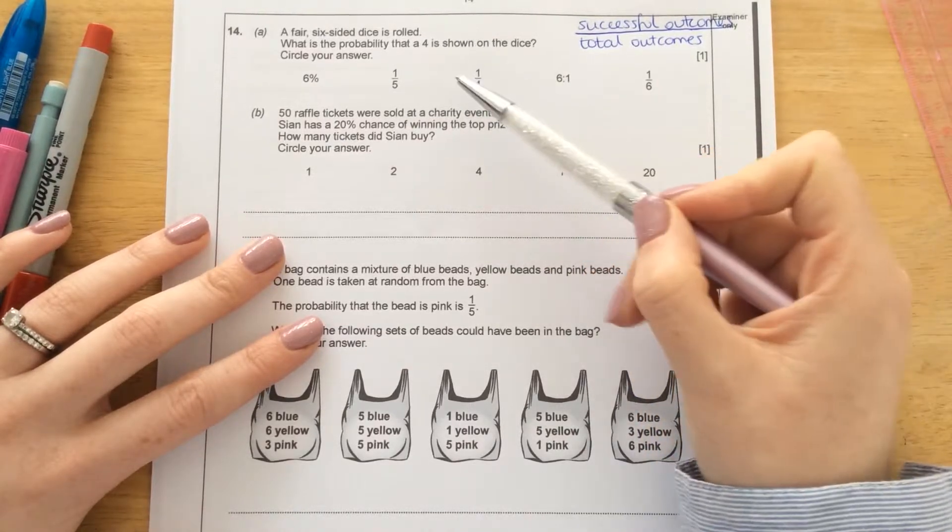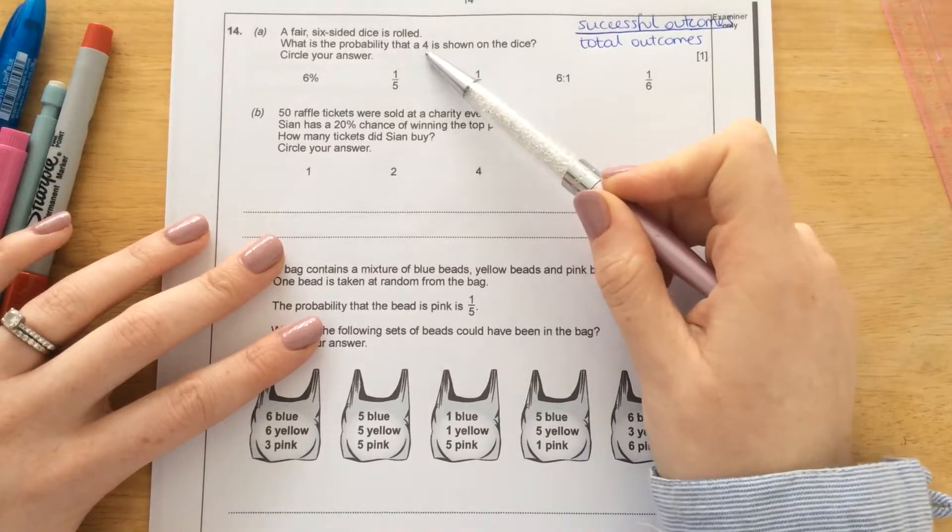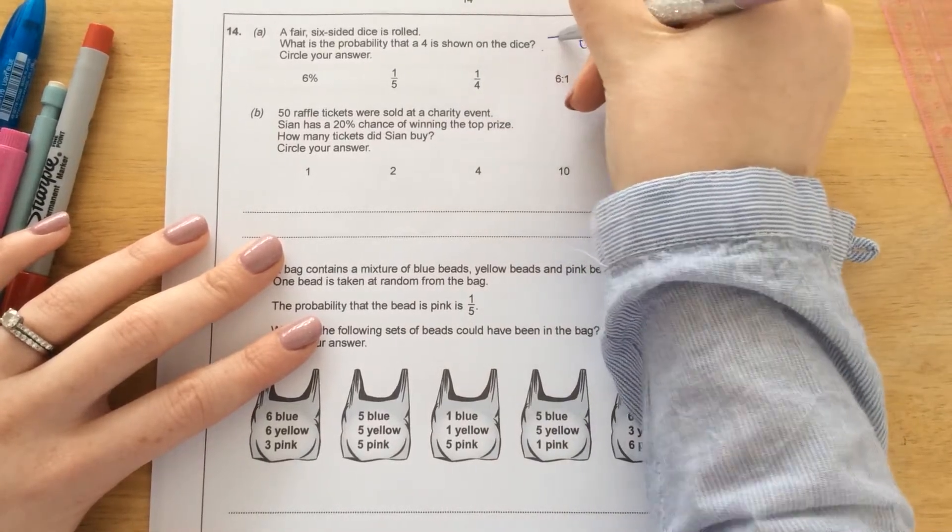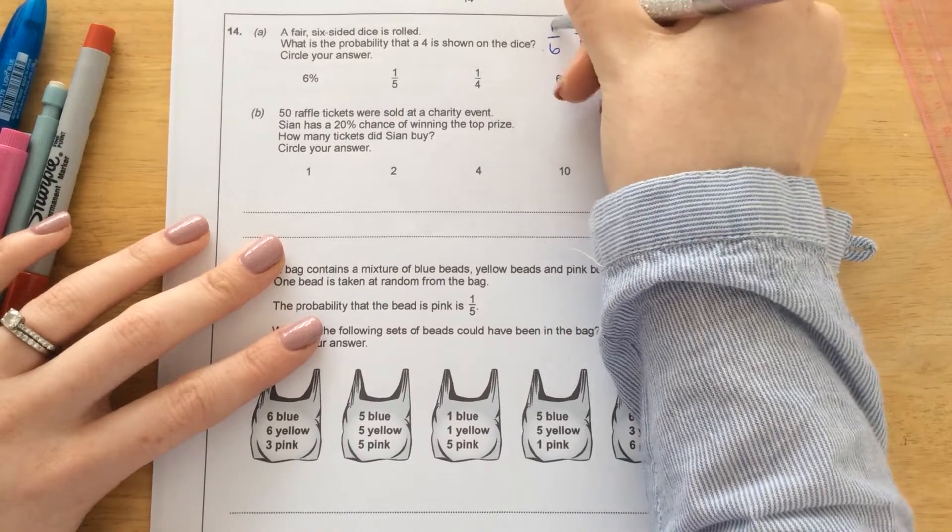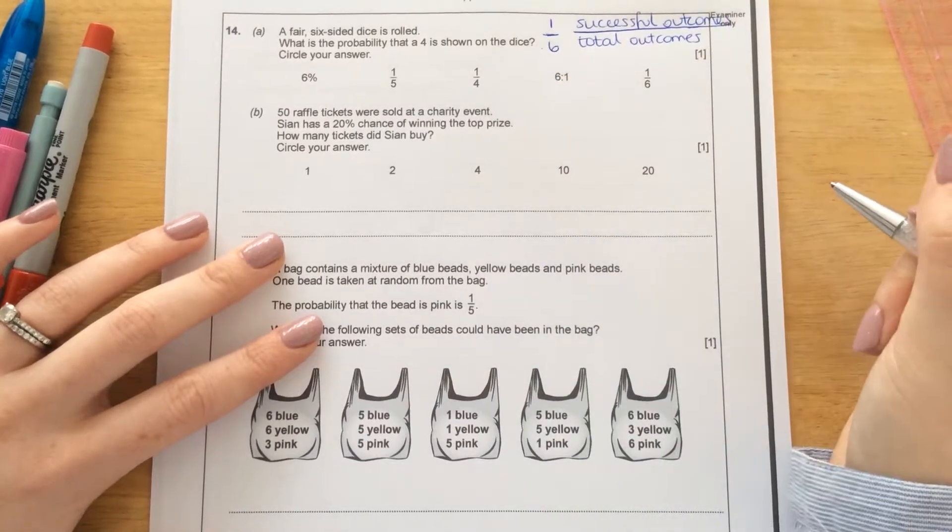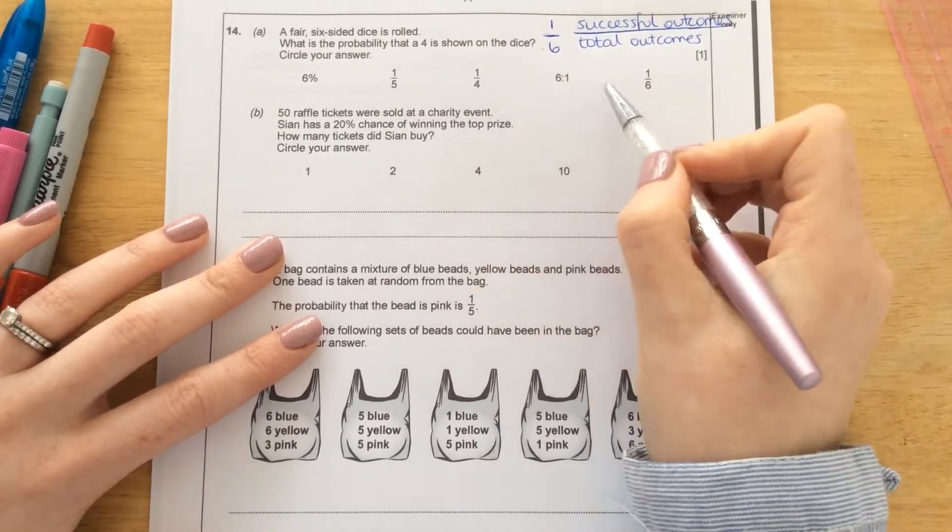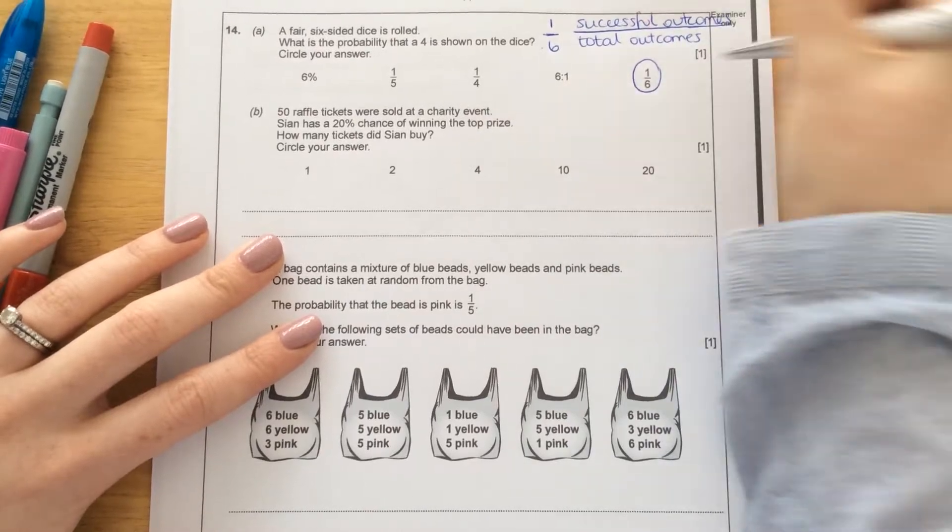three, four, five, six. And how many of those is a four? Well, there's only one four on a die. So that would be one over six. And that's one of our options here. And that's one mark.